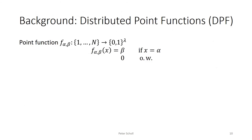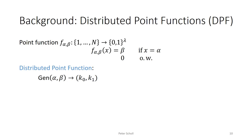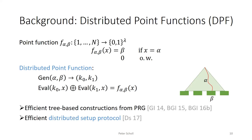Before moving on to the constructions, I'll introduce distributed point functions. These are a secret-shared form of a point function, parametrized by points alpha and beta and a domain size n, which outputs either beta if x equals alpha, or zero on every other input. A distributed point function consists of a key generation algorithm which samples two random keys, and an evaluation algorithm which takes one of the keys and a public input, and outputs a secret sharing of the point function applied to input x. There are very efficient constructions based on any length-doubling pseudorandom generator following a GGM-style tree construction.